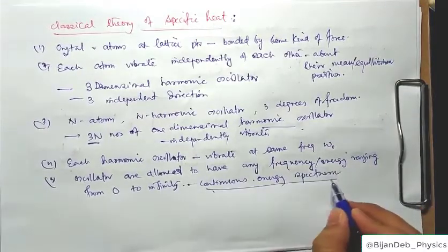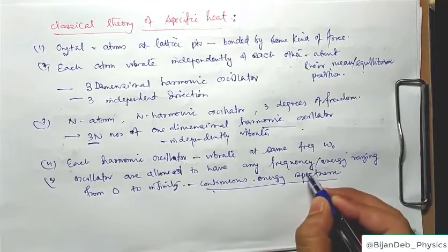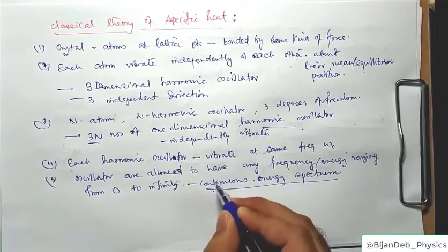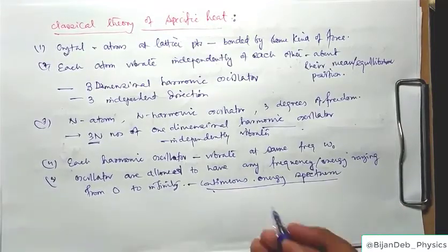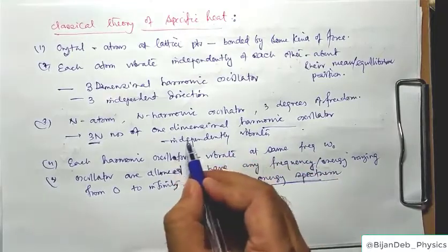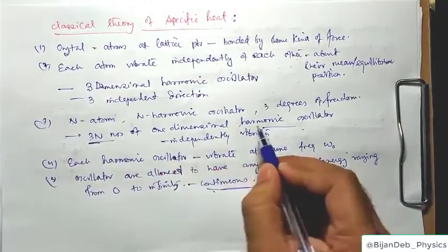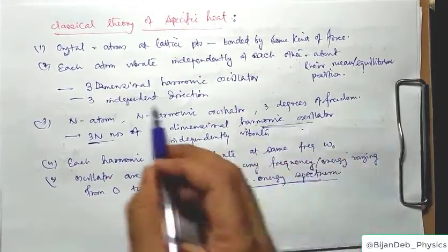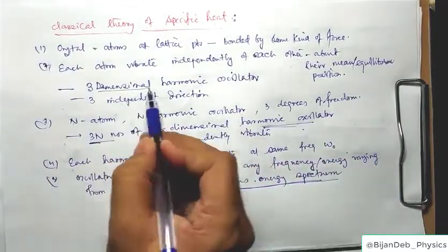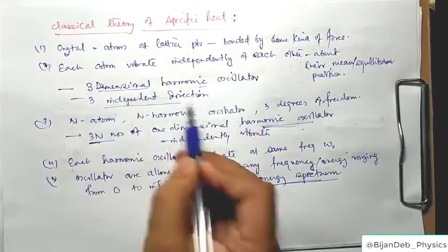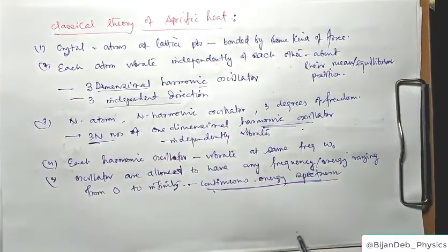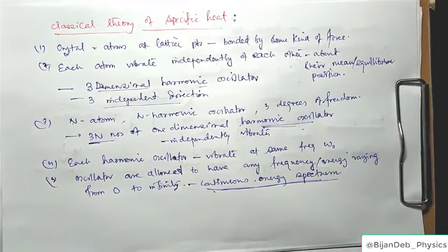Another assumption is that oscillators are allowed to have any energy from 0 to infinity — a continuous energy spectrum. This is the classical concept. So the basic assumptions of classical theory of specific heat are: 3N independent one-dimensional harmonic oscillators with continuous energy spectrum and all vibrating at the same frequency.